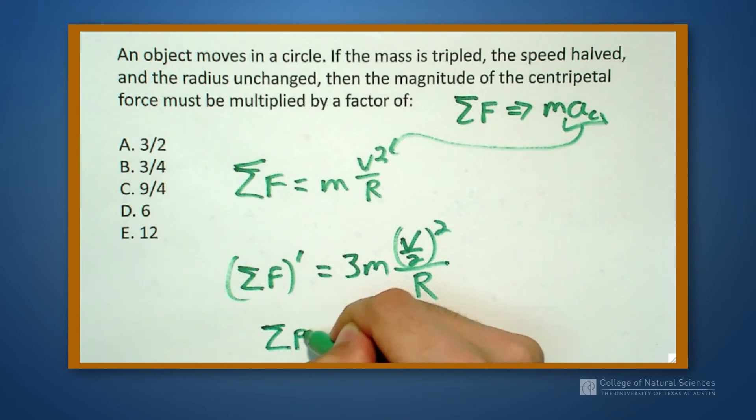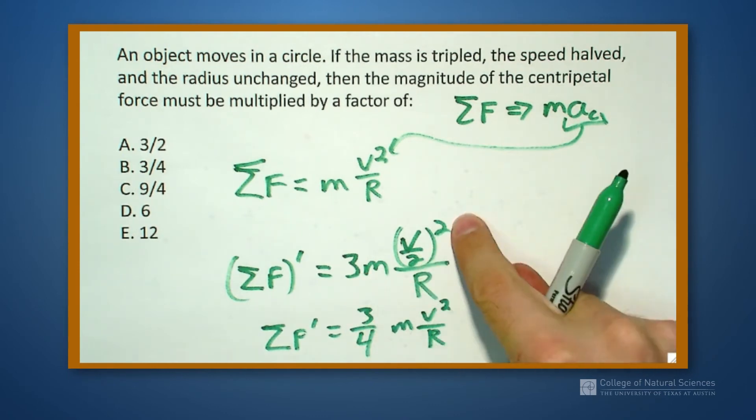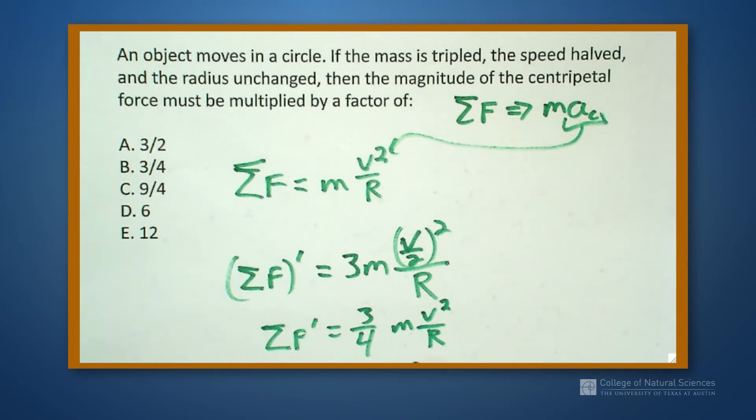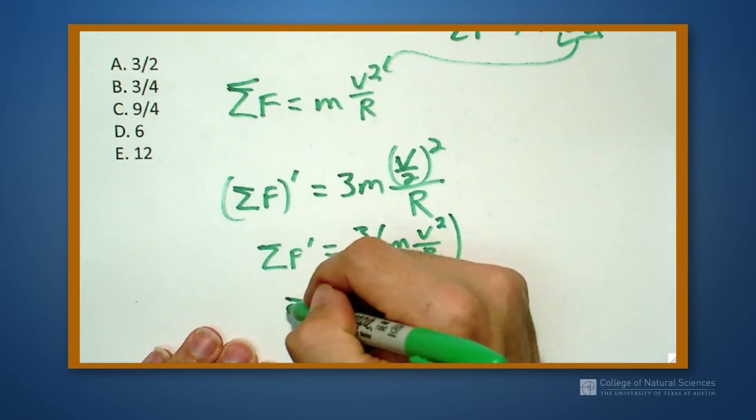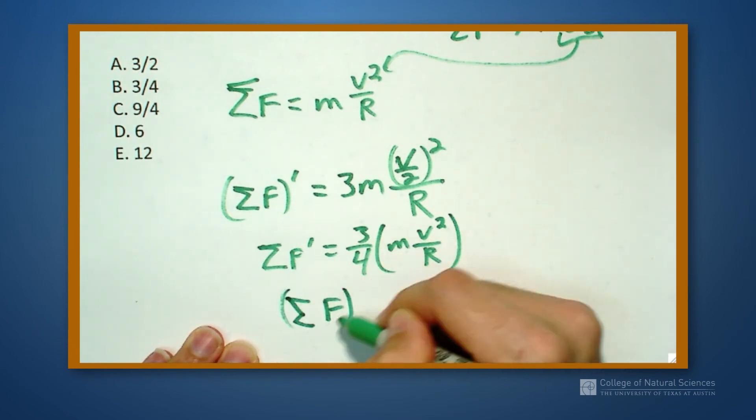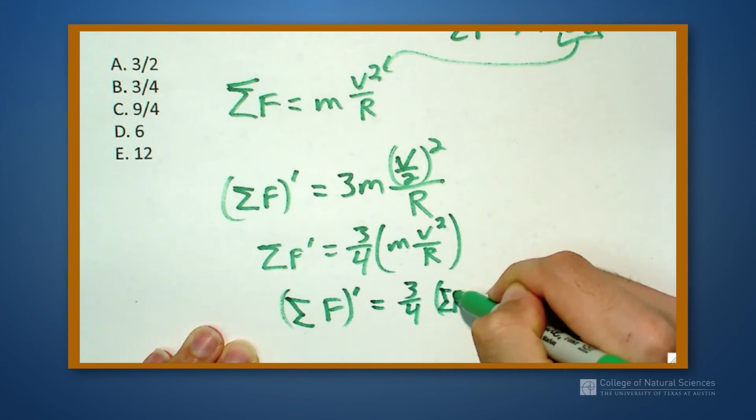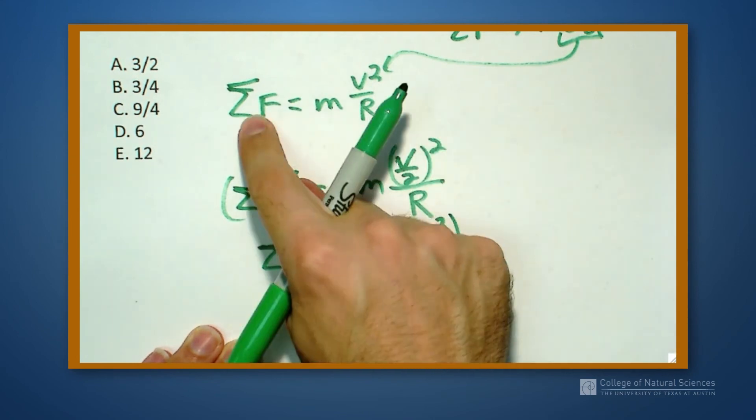So if I look at what F prime is, that's going to be three over four times m v squared over r. Three as a factor there and two squared as a factor in front, which allows me to look at this and see that our new sum of our forces is equal to three-fourths times the old sum of the forces. That value right there was my old force.